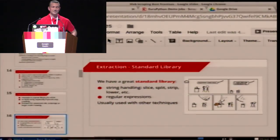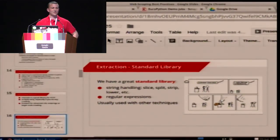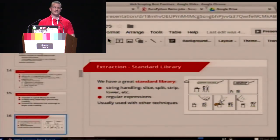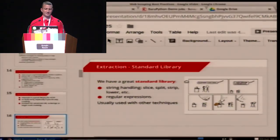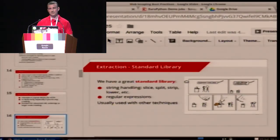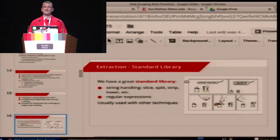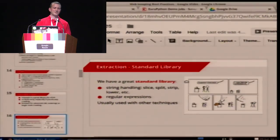Moving on to extraction — the second part. Python is a great language for extracting content and working with strings and data. Even just the built-in features of the language and standard library make it very easy to work with text content. Regular expressions are brilliant for textual content and work great with things like telephone numbers or postcodes. But if you find yourself ever matching against HTML tags or HTML content, you've probably made a mistake — there's probably a better way to do it. I see this code all the time and it's hard to understand and to modify.